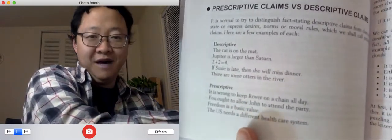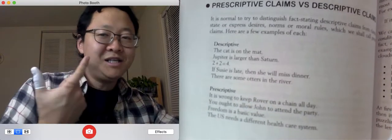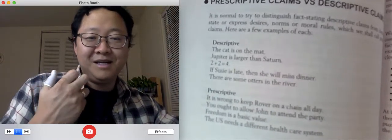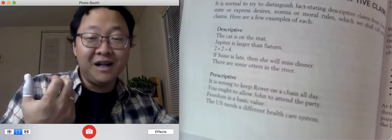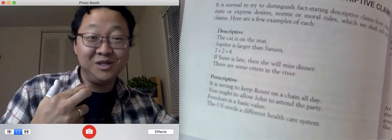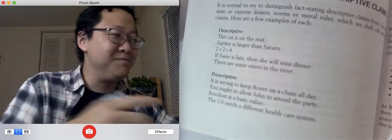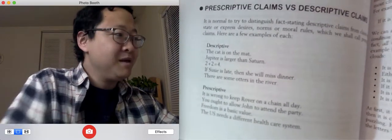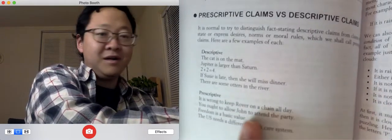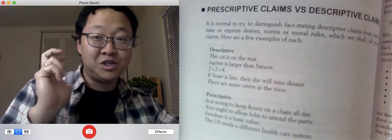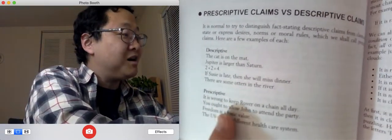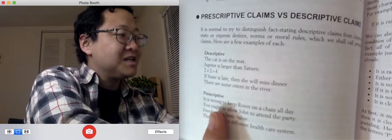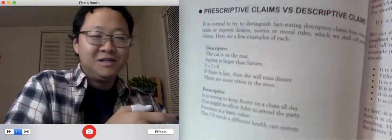freedom is a basic value. That doesn't have the word should in it, but it's still saying as a value, it's something we should value, right? We should try to have more freedom. That's what we're saying when we're saying freedom is a basic value. It is wrong to keep Rover on a chain all day doesn't mention the word should, but by saying it's wrong, we're just saying we shouldn't keep Rover on a chain all day. So that's what makes these claims all prescriptive.